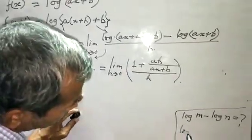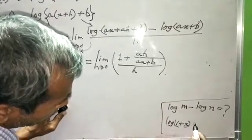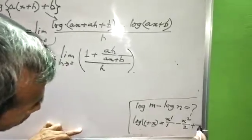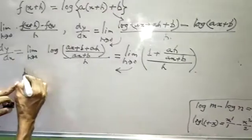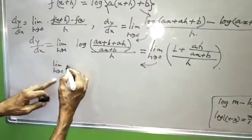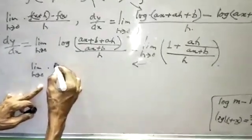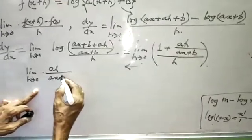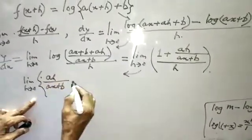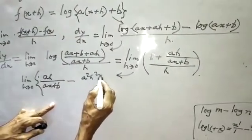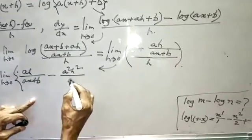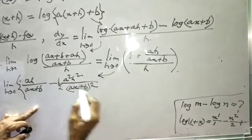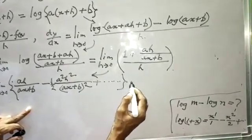Now using the expansion log(1 + x) = x minus x²/2 plus x³/3 minus dot dot dot, where x here is ah/(ax + b). So this becomes limit h tends to 0 of [ah/(ax+b) minus (1/2)(ah/(ax+b))² h² plus dot dot dot] divided by h.